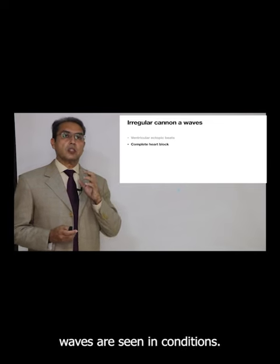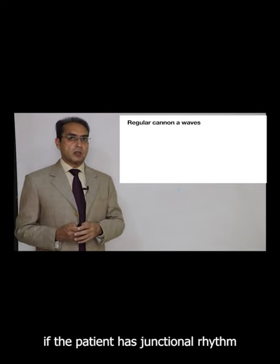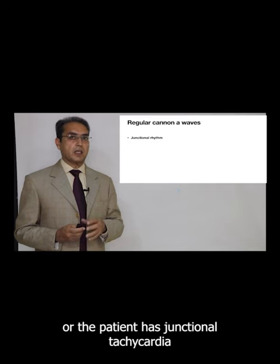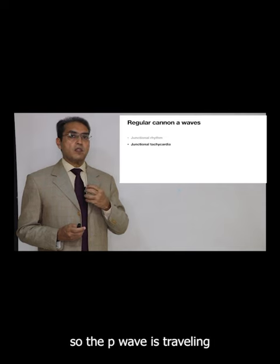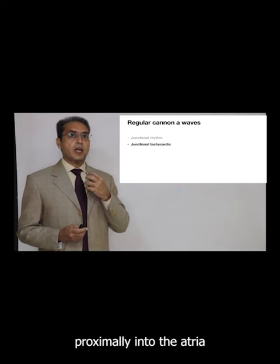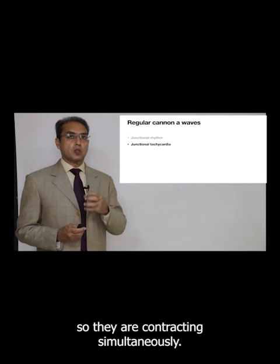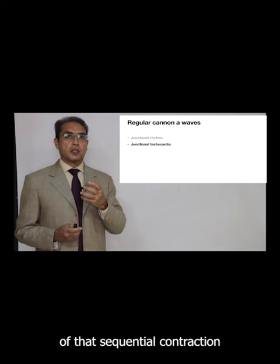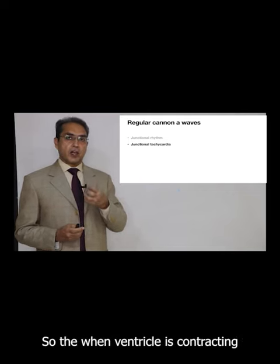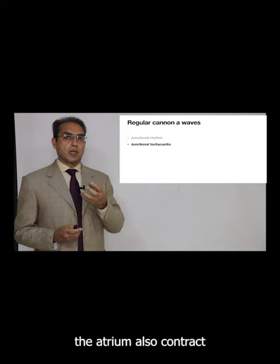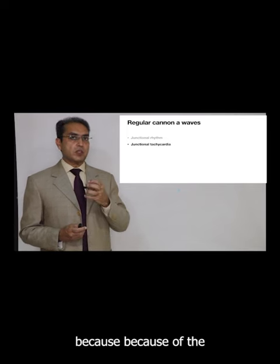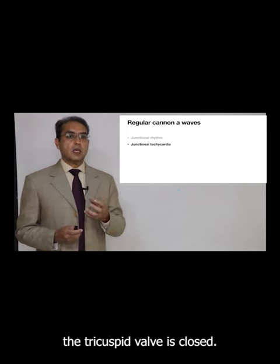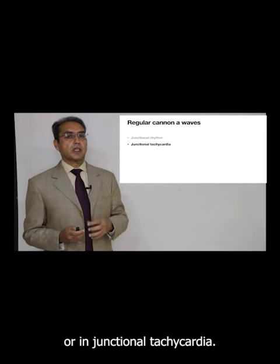Sometimes we see regular Canon waves. The regular Canon waves are seen in conditions such as junctional rhythm or junctional tachycardia. In these two conditions the rhythm is arising from the AV node, so the P wave is traveling retrogradely into the atria and the QRS down into the ventricle. They are contracting simultaneously, resulting in loss of sequential contraction of atrium and ventricle. The ventricle is contracting at the same time the atrium contracts, and that results in backward transmission of pressure because the tricuspid valve is closed due to ventricular contraction.